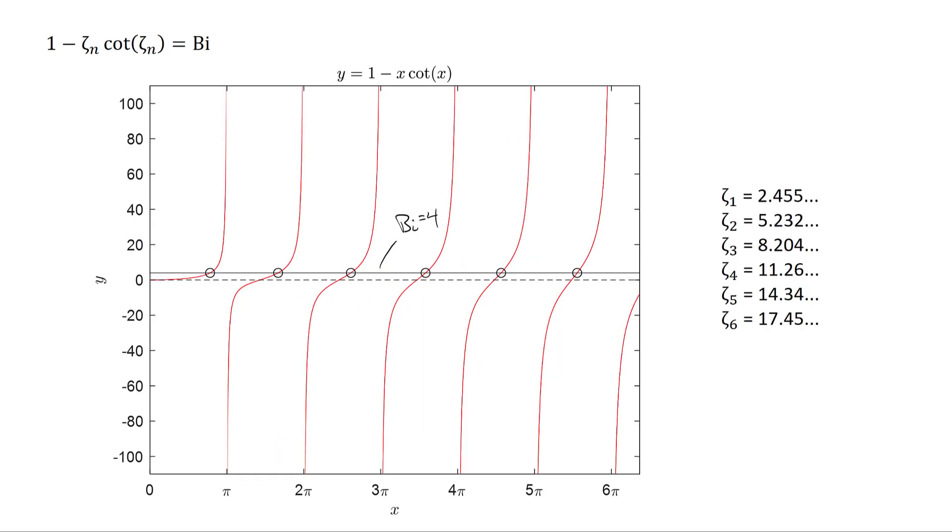In our situation, the Biot number is equal to 4, and I find the first six parameters, zeta 1 through 6, equal to the terms on the right. And I use those in my sum to come up with a temperature profile. In fact, I didn't use the first six—I think I used maybe 150 or more, probably overkill for this.